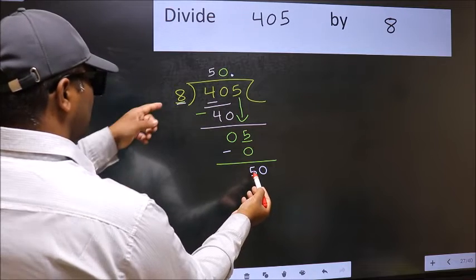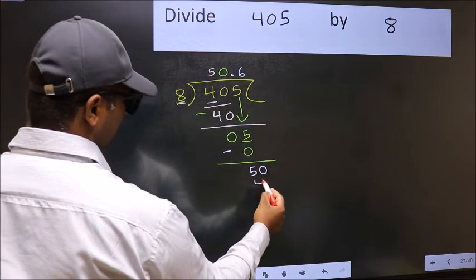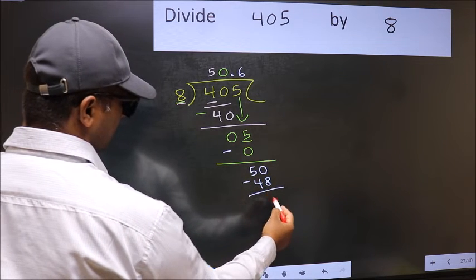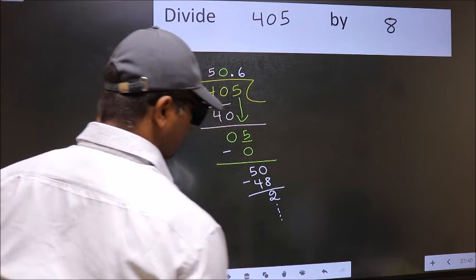A number close to 50 in 8 table is 8 times 6, 48. Now we should subtract. We get 2. And continue the division.